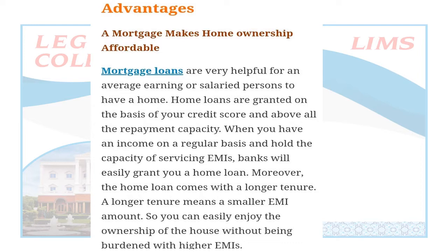In a mortgage loan, you can get money against your property. The benefits are very helpful to an average earning person to have a home. Home loans are granted on the basis of your credit score and repayment capacity. When you have a regular income and can service EMI, the bank will easily grant your home loan. The home loan comes with a longer tenure, meaning a smaller EMI amount.